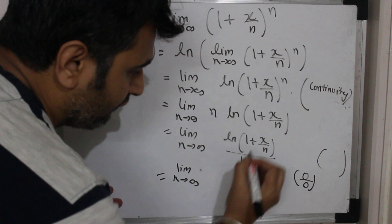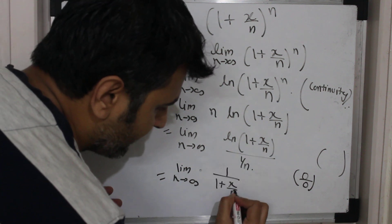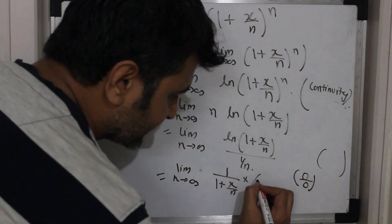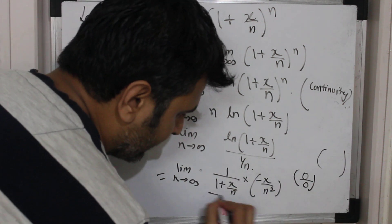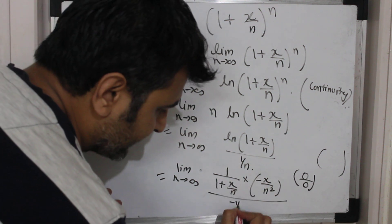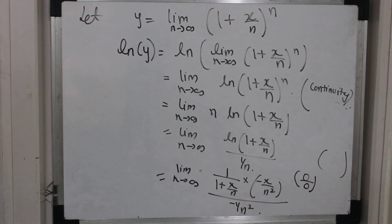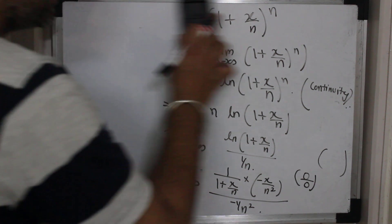We just proved L'Hôpital's rule — if you want to see, I have kept the tag over there you can click on it. So because of L'Hôpital's rule, this is the limit as n goes to infinity of the derivative of (1 + x/n), differentiating with respect to n, which gives minus x upon n squared. The derivative of (1/n) is minus 1 by n squared. You simply differentiate with respect to n — that's the good thing you can do.